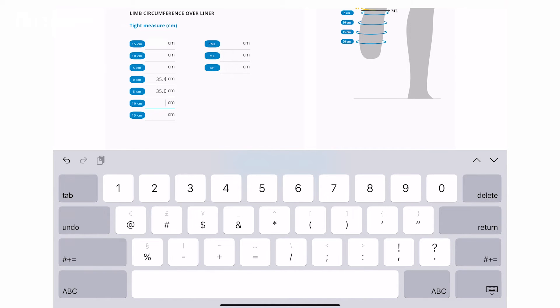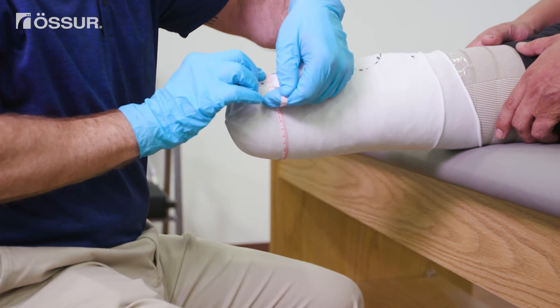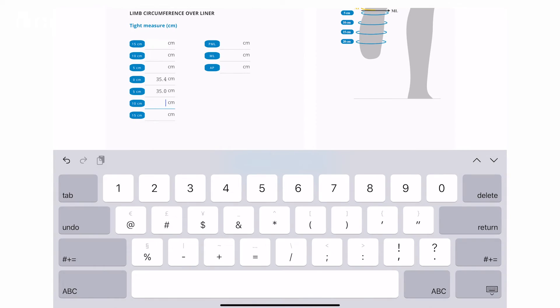Move down to the next marked location, take the measurement, and enter it into the portal. The circumference for this location is 34.8 centimeters.